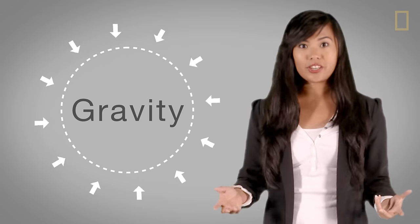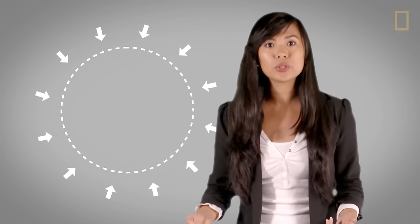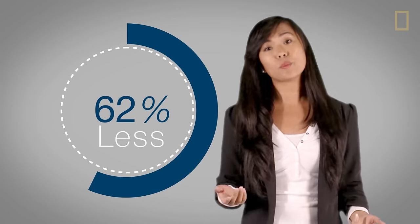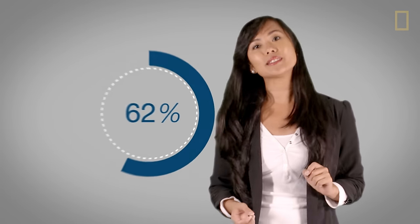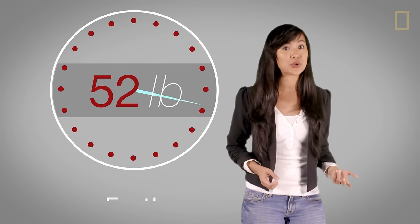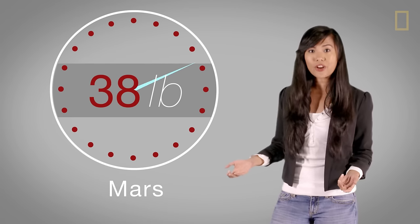Another key difference is gravity. The gravitational pull is much weaker on Mars, about 62 percent less. That means that someone who weighs 100 pounds here on Earth would only weigh 38 pounds on Mars.